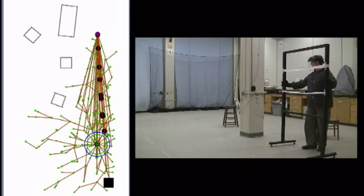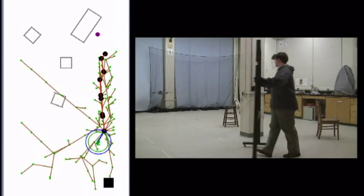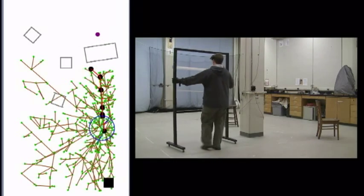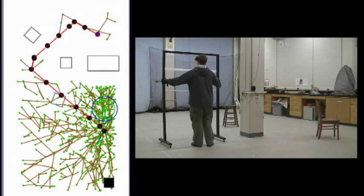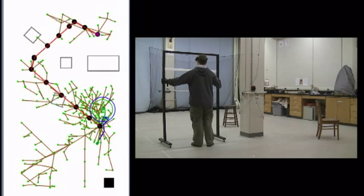This flight demonstrates the planner's ability to continuously adapt to a changing environment. As before, the large obstacle is moved to obstruct the path to the goal. The planner again picks a path around the column.